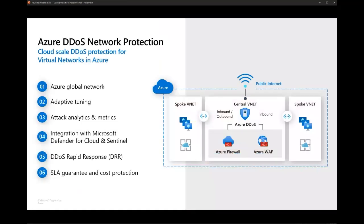Now let's go over Azure DDoS Protection itself. The original SKU is Azure DDoS Network Protection — some may know it as DDoS Protection Standard. It's now renamed to Network Protection because you enable it on the whole VNet. You can have just one plan for your whole tenant and enable protection per VNet, so all public IPs in that specific VNet are protected. It includes Azure global network protection, adaptive tuning, attack analytics, and other features.